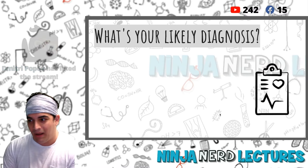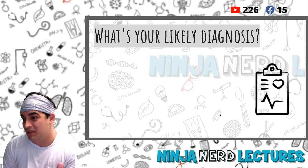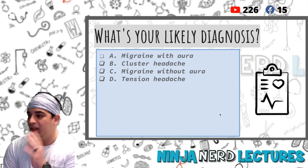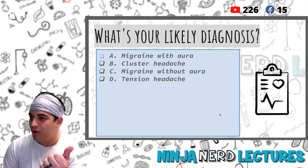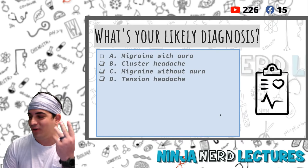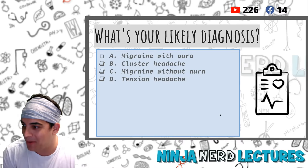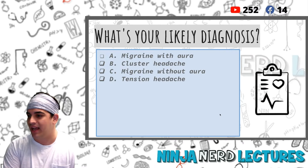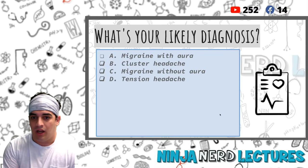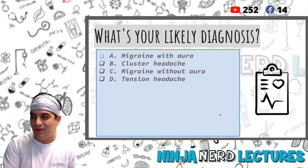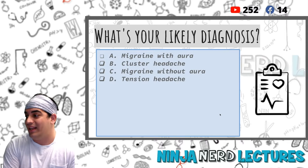So with that, what's your likely diagnosis? He has red flag signs - we'll probably get some imaging. But at this point, if I were to say what's the likely diagnosis out of these options - migraine with aura, cluster headache, migraine without aura, or tension headache - assuming this could potentially be a primary headache, which one would you suspect?